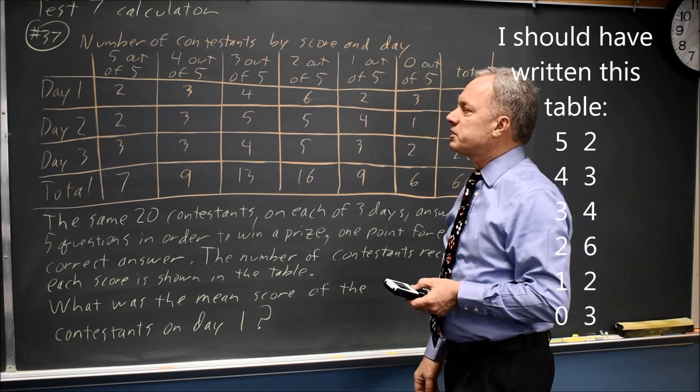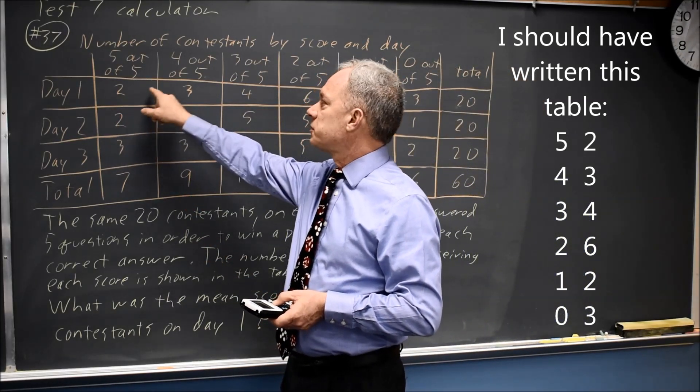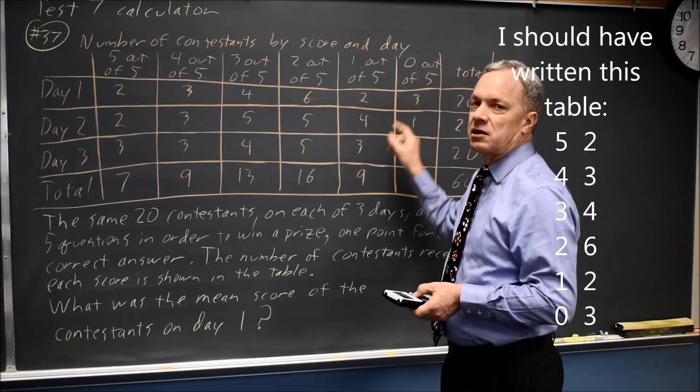And list 2 is the frequency list. That's how many of the contestants got that score. That would be 2, 3, 4, 6, 2, and 3.